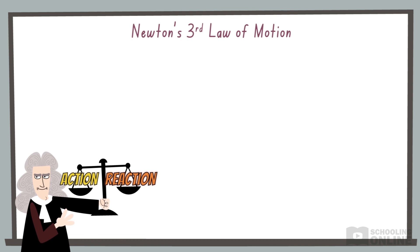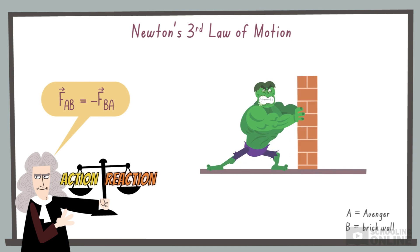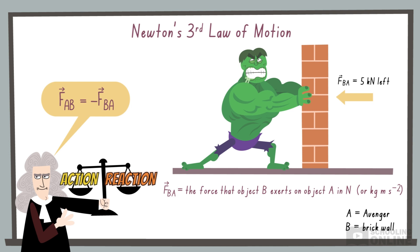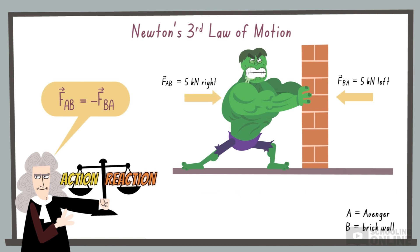Newton's third law can also be expressed as an equation. Here, F_AB is the force that object A exerts on object B, while F_BA is the force that object B exerts on object A. The equal sign reminds us that the forces have equal magnitudes, while the minus sign indicates that they point in opposite directions.